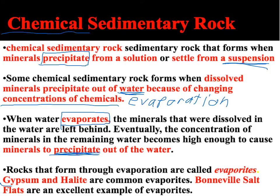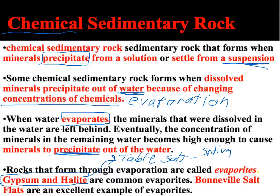The main evaporites are gypsum and halite. Halite is probably the biggest of these, and that is another name for table salt, also known as sodium chloride or NaCl. The salt we get for our roads and our food comes from salt deposits deep in the ground, where water that had salt in it once evaporated and left the salt behind as an evaporite — those are chemical sedimentary rocks.